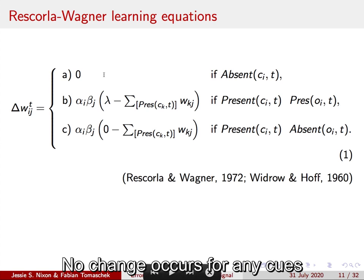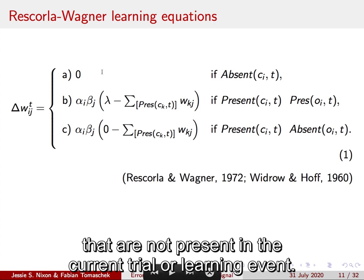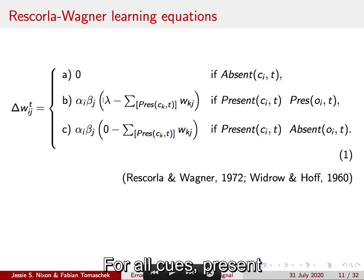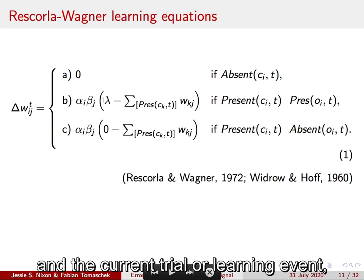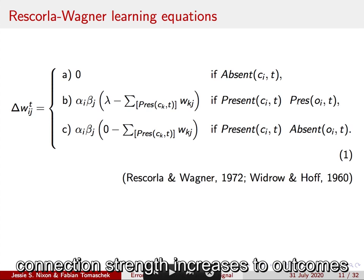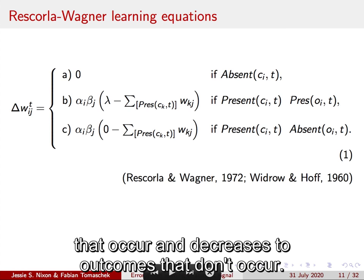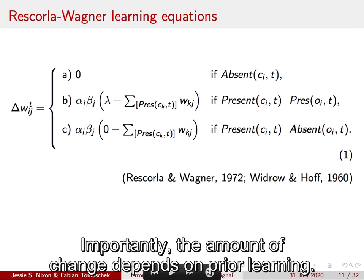The Rescorla-Wagner equations mathematically describe this. On each trial, the learner updates expectation of a particular outcome given the available cues. No change occurs for any cues that are not present in the current trial or learning event. For all cues present in the current trial or learning event, connection strength increases to outcomes that occur and decreases to outcomes that don't occur.